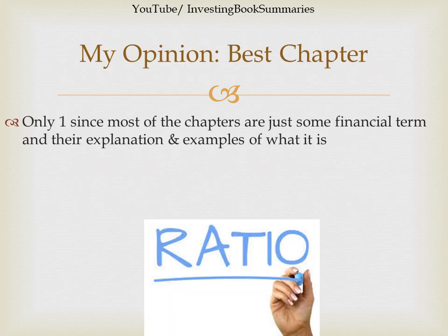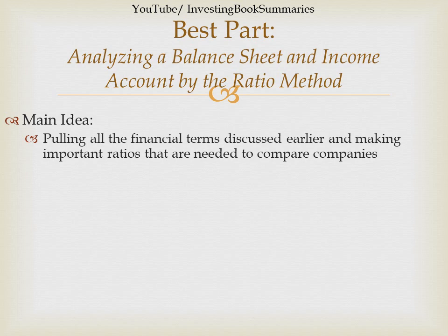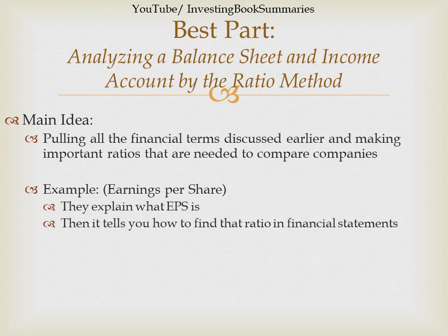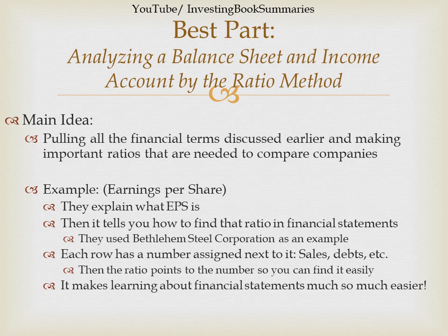What is, in my opinion, the best chapter? I'm only going to list one, since most chapters are just a financial term with its explanation and examples. But the best part in the book is analyzing a balance sheet and income account by the ratio method. The main idea of this section is to pull all the financial terms discussed earlier and make important ratios needed to compare companies. For example, we have earnings per share — they explain what EPS is, then tell you how to find that ratio in financial statements, using Bethlehem Steel Corporation as an example. Each row has a number assigned to it, such as sales, debts, and so on, and the ratio points to the number you need to find so you can find it easily. If you need to find earnings or the number of shares, it points you to exactly where to find that. It makes learning about financial statements so much easier.